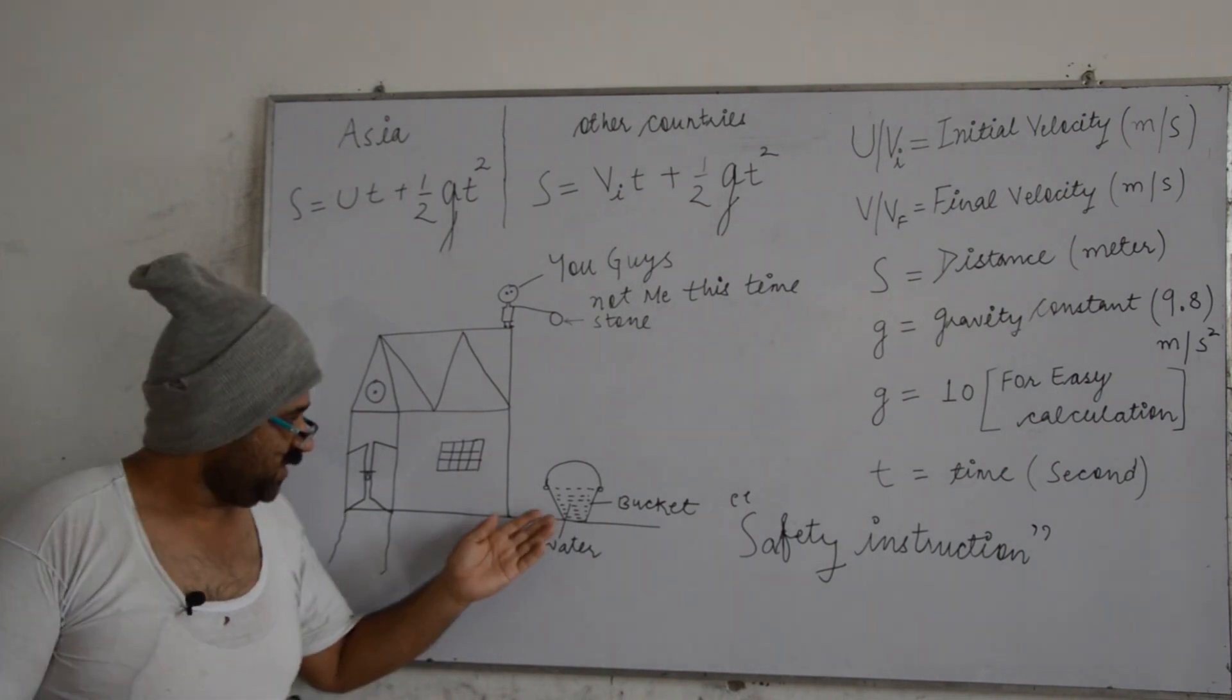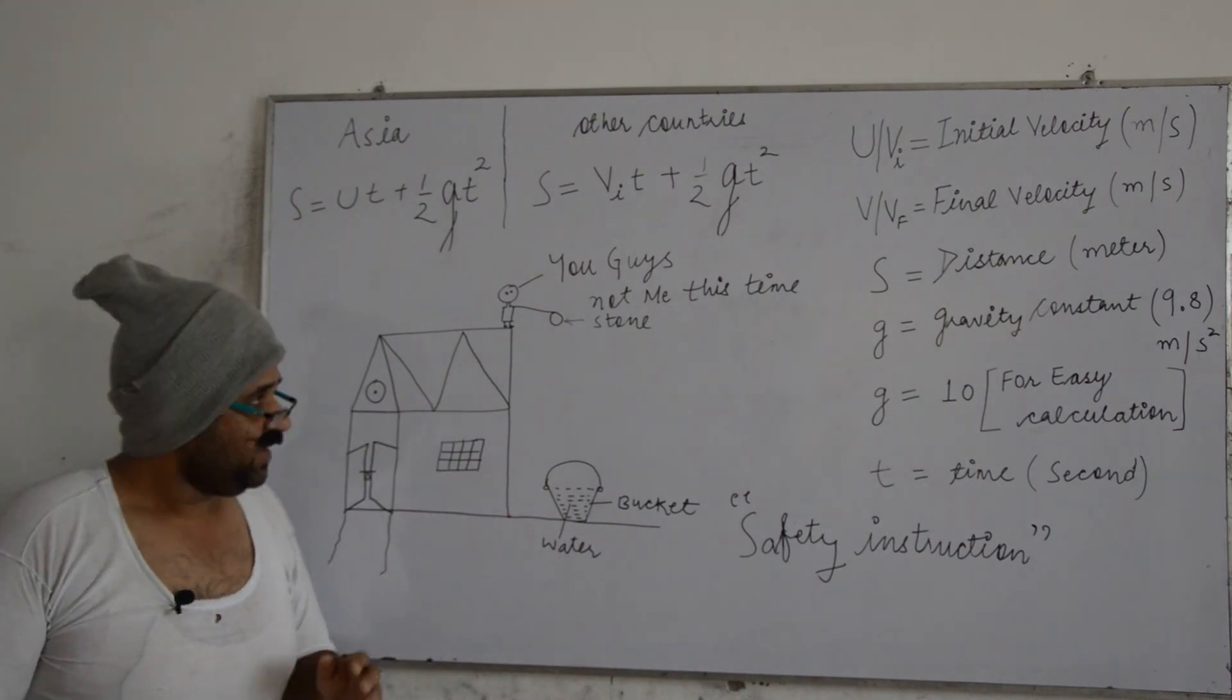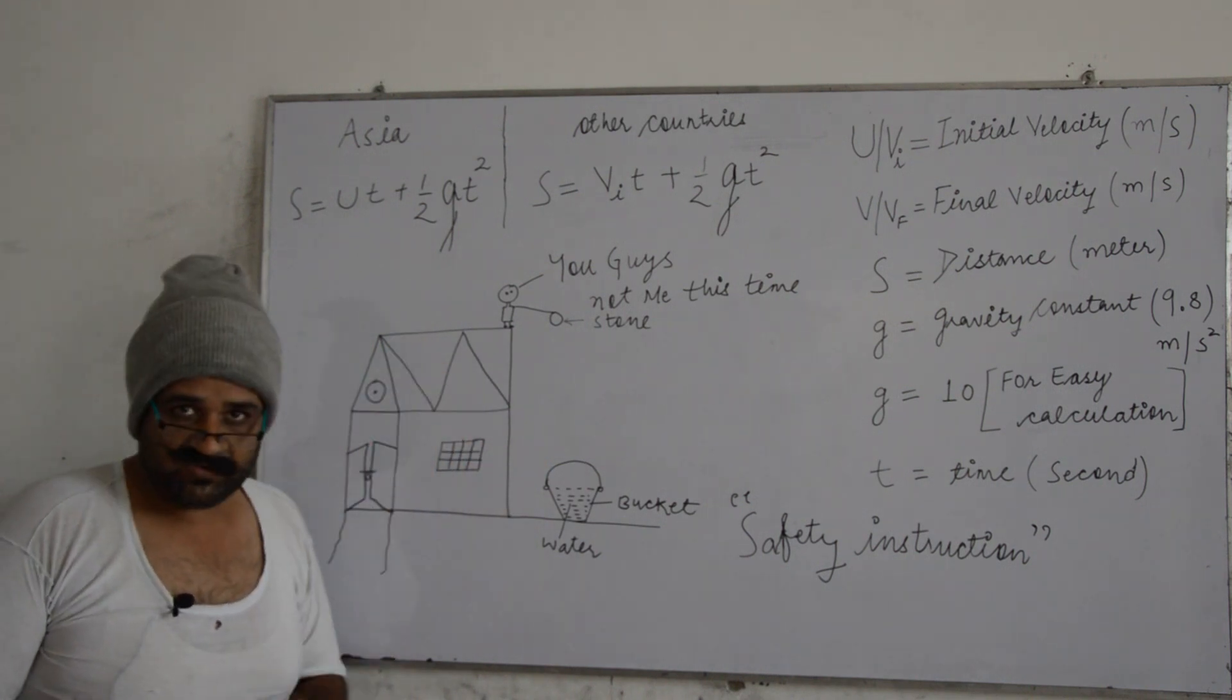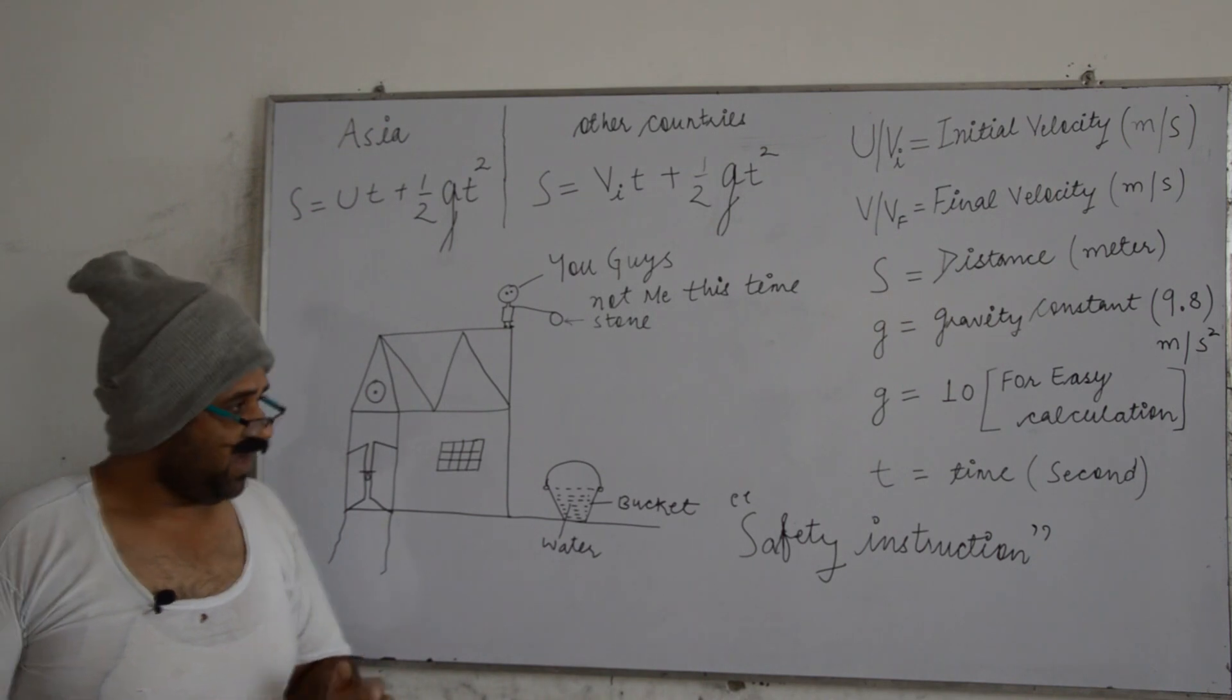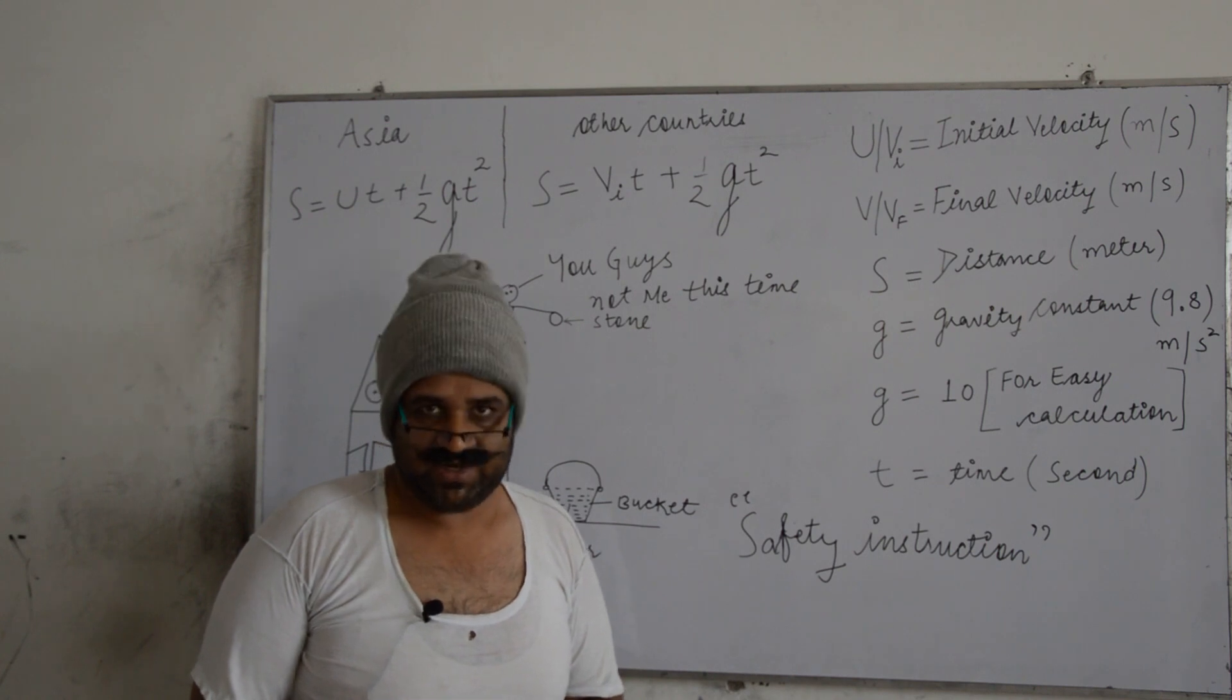You can perform this activity at home also. What exactly you need to do is take a bucket, fill it up with water, put the bucket here, you need to go to the top floor of your building, then drop a stone, calculate the time, put the value in the second equation and you will get the distance. Okay. Now safety instruction, don't do too much of gravity analysis or motion analysis otherwise it will lead to paralysis.